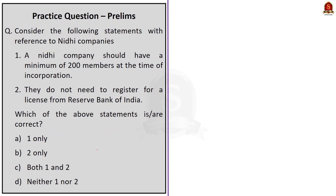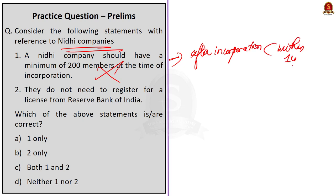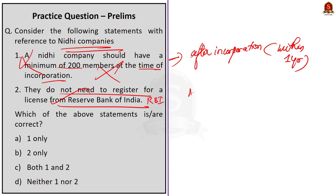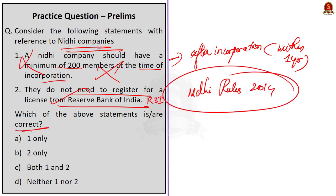Look at the second question regarding Nidhi companies. It is also a two-statement question. Statement one is incorrect — the condition of a minimum of 200 members applies after incorporation within a one-year period, so it is not required at the time of incorporation. Statement two is correct — as discussed, Nidhi companies are a kind of NBFC but do not need to register for a license from the RBI; they follow Nidhi Rules 2014. The question demands the correct statement, so your answer is option B, two only.